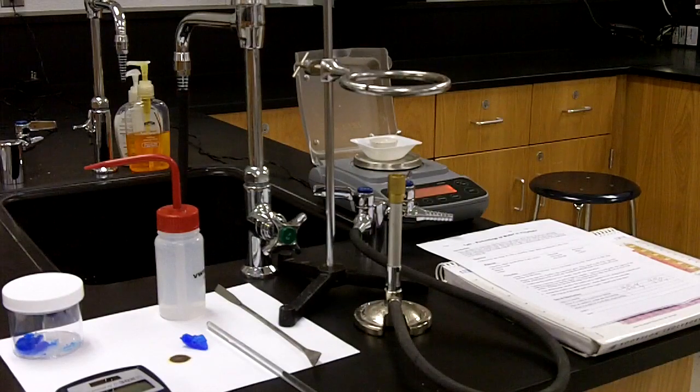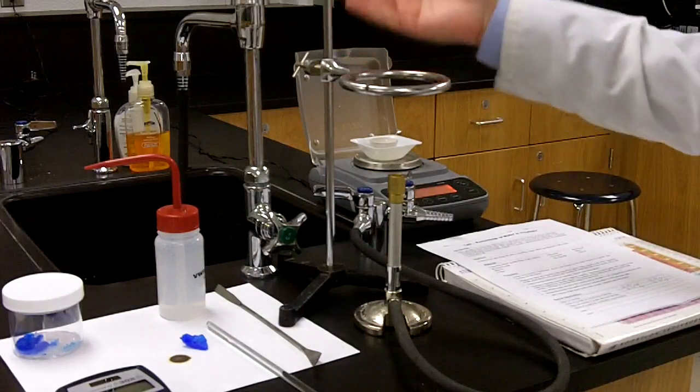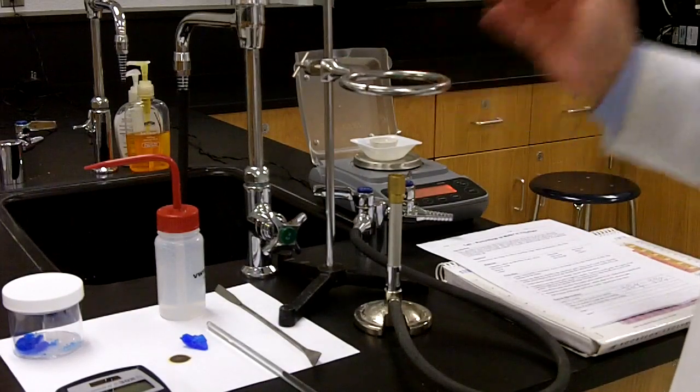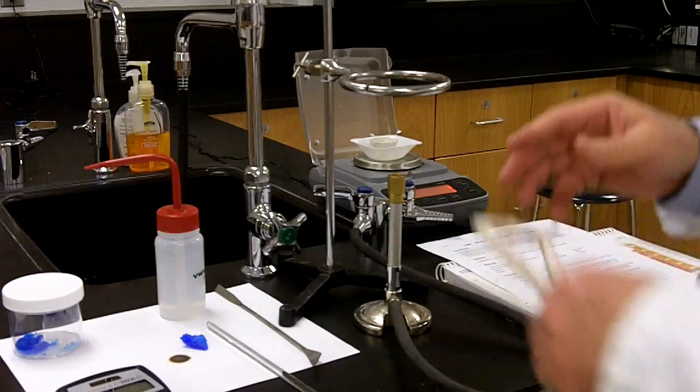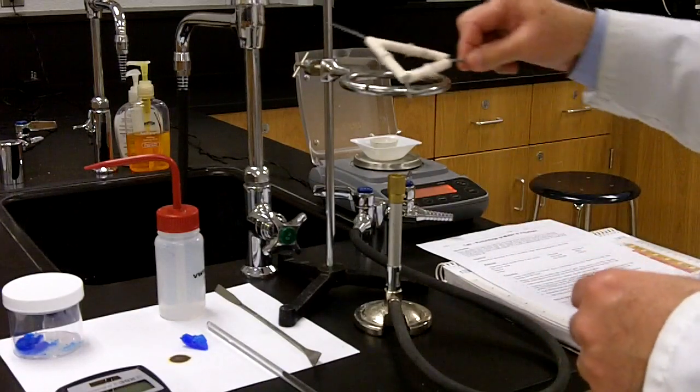So the next thing I need to do is set up the apparatus for heating. The ring stand is already set up for me. In this case, I've got a ring clamp. All I need to do now is to add a clay triangle.